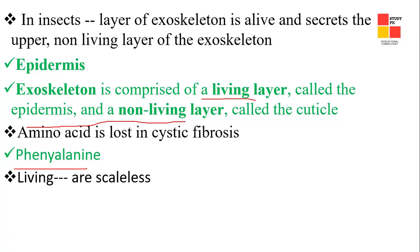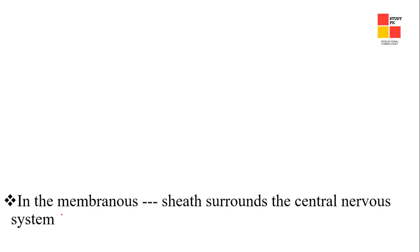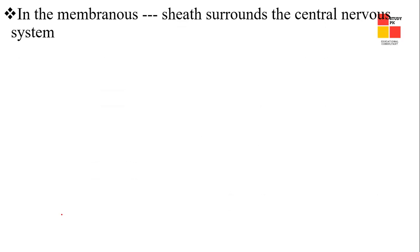Next one: head fishes are scaleless. Next one: in the membranes, the sheath that surrounds the central nervous system — the right answer is perineuron.